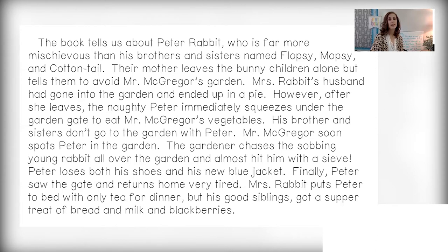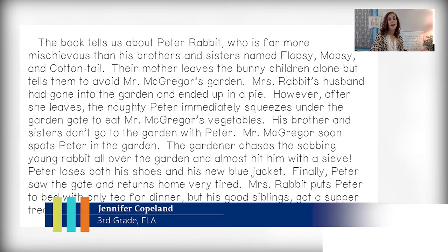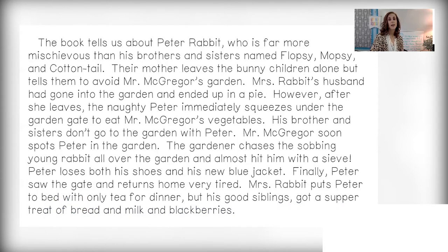His brothers and sisters don't go to the garden with Peter. Mr. McGregor soon spots Peter in the garden. The gardener chases the sobbing young rabbit all over the garden and almost hits him with a sieve. Peter loses both his shoes and his new blue jacket. Finally, Peter saw the gate and returns home very tired. Mrs. Rabbit puts Peter to bed with only tea for dinner, but his good siblings got a treat of bread and milk and blackberries. Good readers put their thoughts together and can summarize a paragraph, a page, or even a chapter.